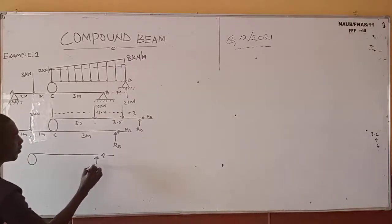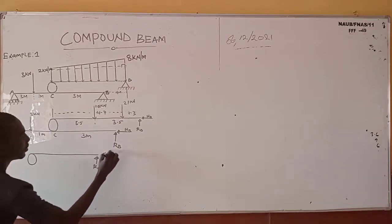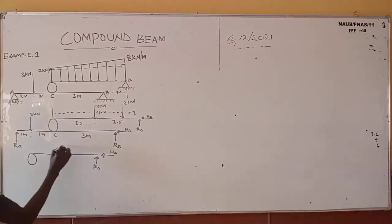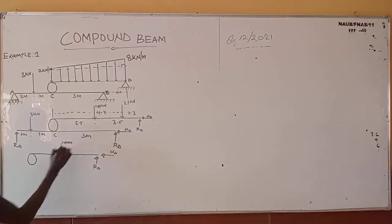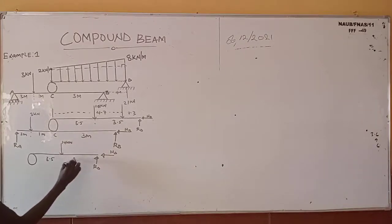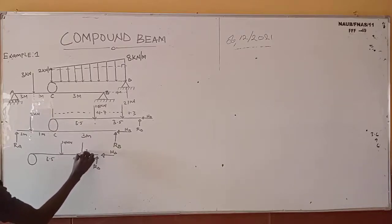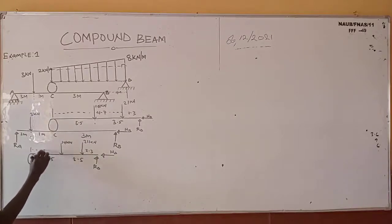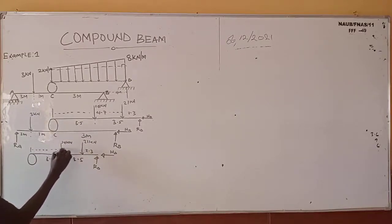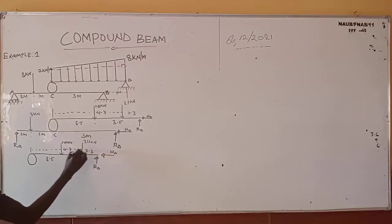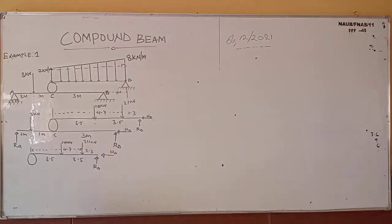For the first beam, we have reaction ROD and HD. The 14 kN load acts at 3.5 meters from each end, and the 21 kN load acts at 2.3 meters from one side — meaning 4.7 meters from the other. Instead of drawing the internal hinge force again, we just pick a direction — upward or downward — for ROC at the hinge.